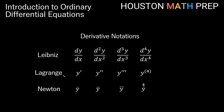We also have the Lagrange prime notation: y prime being the first derivative, y double prime the second derivative, y triple prime the third derivative. Once we get past three primes, we denote the fourth derivative and beyond with the order of the derivative in parentheses. So this last expression is not y to the fourth — it is actually the fourth derivative of y.